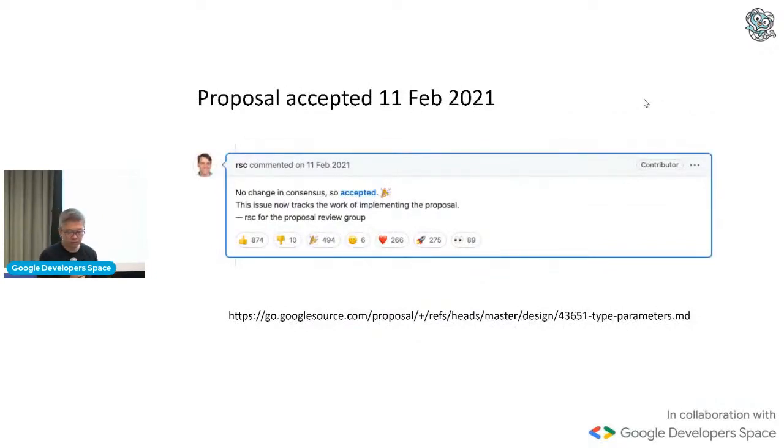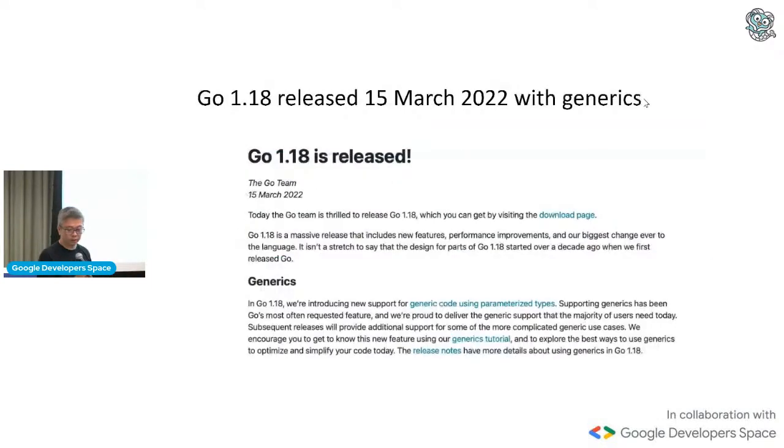And of course, there was a hotly debated about, you look through this particular issue, they had 400 over comments, right? There was like a lot of debates about it. Some of it like quite fiercely debated. But at the end of the day, it was accepted by Russ Cox, who said that, you know, whatever he said earlier on. So it was accepted on the February 11th, 2021. That's one year ago. And just how long is it? Just two months ago, right? 15 March 2022, when Go 1.18 was released, it included this particular implementation for generics called type parameters. So that's a little bit of history of how generics came about.